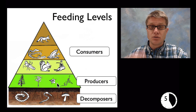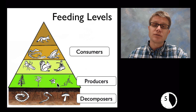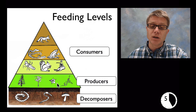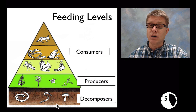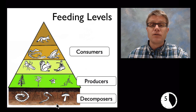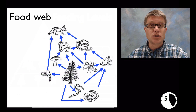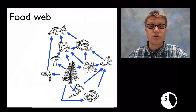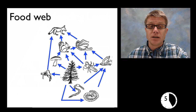Producers and consumers aren't the only two groups. When organisms die we have to move the material back into the ecosystem, and we do that using decomposers. Worms, mushrooms, fungi, and bacteria are very important decomposers. We should introduce the idea of a food web, which shows how matter and energy move in an ecosystem.